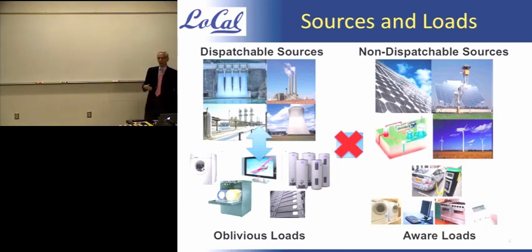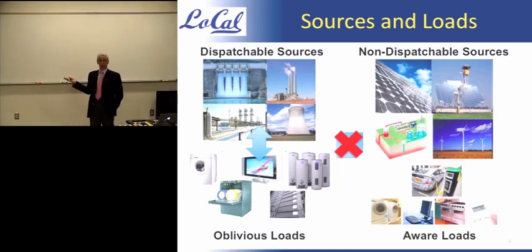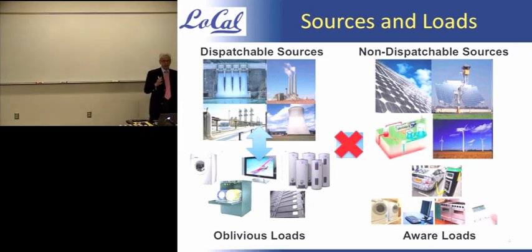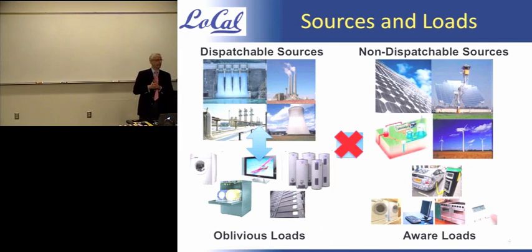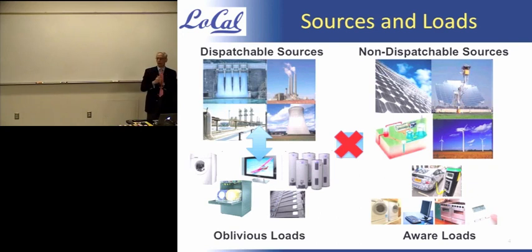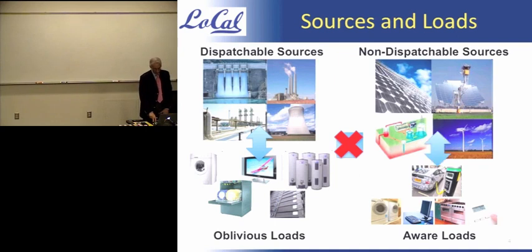A second piece is to make loads more aware of the availability of energy and give them a more adaptable work function. People have talked about smart loads for a long time — a lot of smart loads figure out no one is in the room and turn the lights off. Now we're trying to get into a deeper level of understanding. In a room like this during a presentation, not all the fluorescent bulbs need to be on; every other bulb could be sufficient. Awareness about what's going on can be exploited to reduce energy demands to match energy availability.